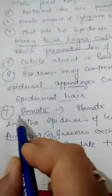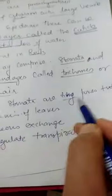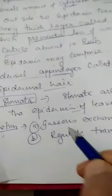So now we are taking the first appendages, that is stomata. This is the definition of stomata - these are tiny pores present in the leaves. What is the function of stomata? Gaseous exchange and regulating transpiration.